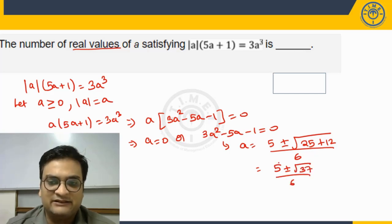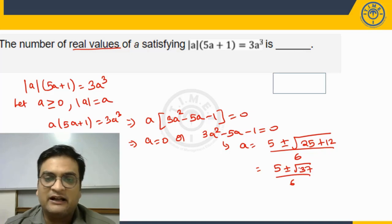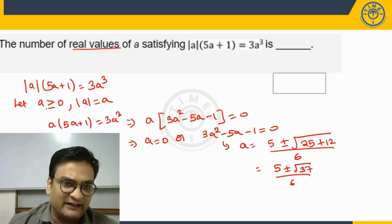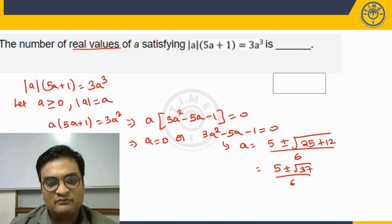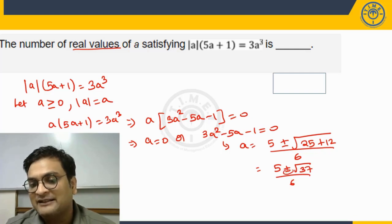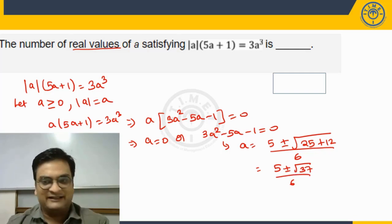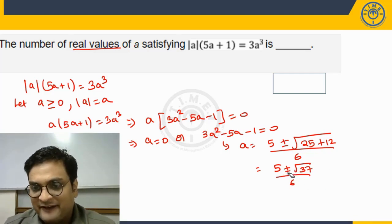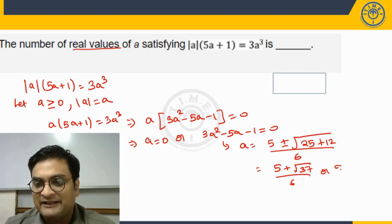But please note here, I do not want any negative values because I have assumed a to be greater than or equal to 0. So I do not want any negative values. Hence, we will get rid of the minus root, the root with the minus sign. So I will only take 5 plus root 37 by 6.